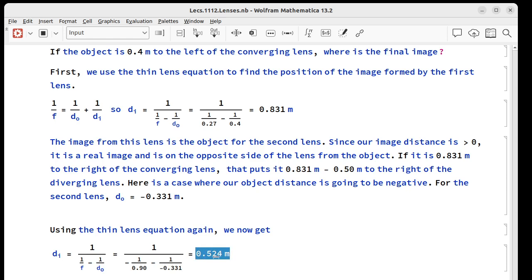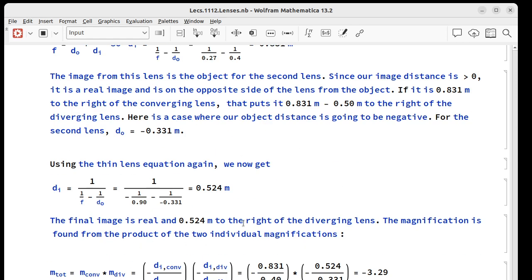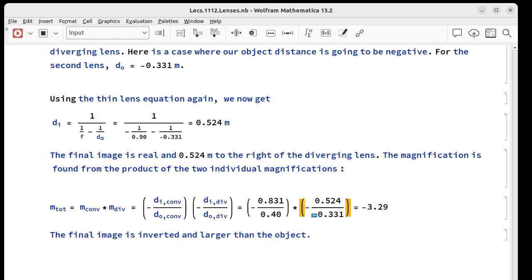So that means the final image is real, and it's 0.524 meters to the right of the diverging lens. Magnification, we get that from the product of the individual magnifications. So we put in the numbers for the converging lens, the diverging lens. Notice these negatives cancel. But we have a negative here, so that our total product of all this is negative 3.29. So that tells us that looking through this telescope, the final image will be upside down and larger than the object.